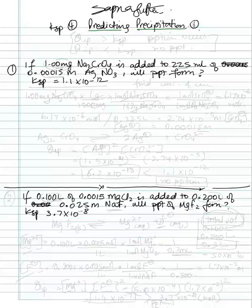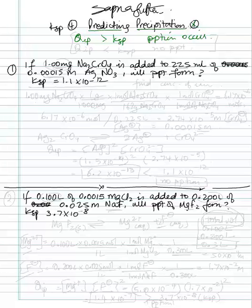Predicting precipitation — this is going to be like what we did for predicting equilibrium, sort of. Where you had the Q, here we call it QIP. If QIP is more than KSP, then precipitation is going to occur, because the concentration of the products is more than the KSP. If QIP is less than KSP, then there is no precipitation. Those are the two things you have to keep in mind when looking at predicting precipitation problems.